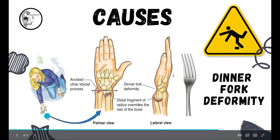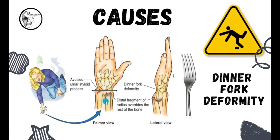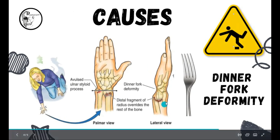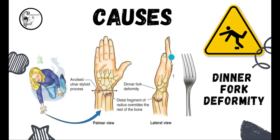When you fall down on an outstretched hand, the complete pressure will come on the distal end of radius, and that causes the fracture of the distal end — particularly 2.5 centimeters above the lower end or the distal end of the radius — and the fractured fragment will get displaced backwards. And here you can see a curve that is formed just proximal to the wrist joint, and that defines the dinner fork deformity.